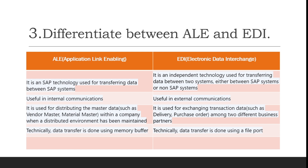Question number three: What are the differences between ALE and EDI? ALE is Application Link Enabling and EDI is Electronic Data Interchange. ALE is the SAP technology used for transferring data between SAP systems, whereas EDI is an independent technology used for transferring data between two systems — either SAP or non-SAP. We use EDI technology for transferring data between non-SAP systems and SAP systems, but ALE is only used for SAP systems. ALE is useful for internal communication whereas EDI is useful for external communication.